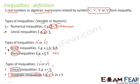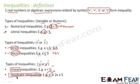Strict inequalities use greater than or less than, while slack inequalities use greater than or equal to, or less than or equal to. For linear inequalities, the variable is x — for example, x is greater than 5. For quadratic inequalities, we have x squared, such as x squared plus 2x plus 3 greater than or equal to some value.